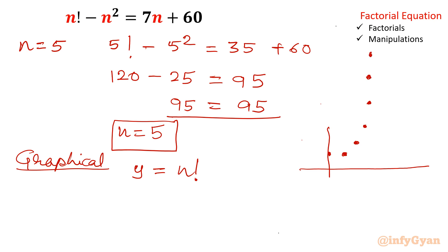So if I will find out gradient of this function, if I will find out gradient of factorial function after 4 means 5, 6, 7, 8 onwards.